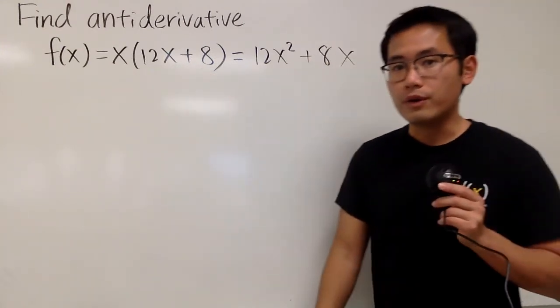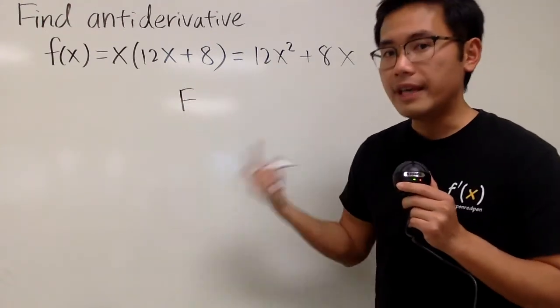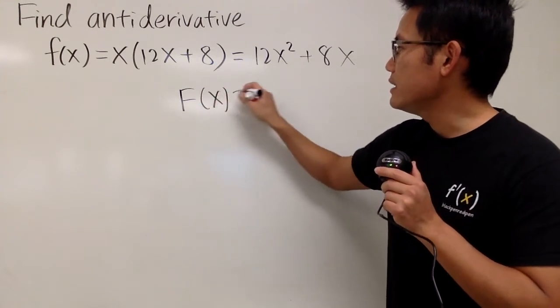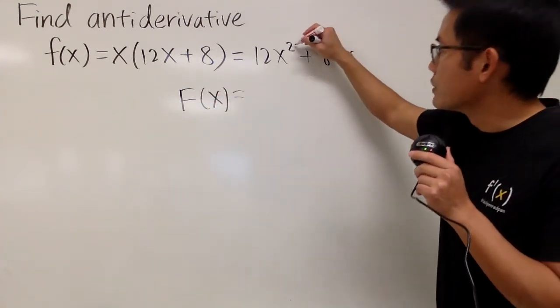And then, we can reverse the power rule. So, I'm going to write down capital F for the antiderivative of that. So, I'll write down F of x is equal to, well, to do the antiderivative of this, we can just go ahead,